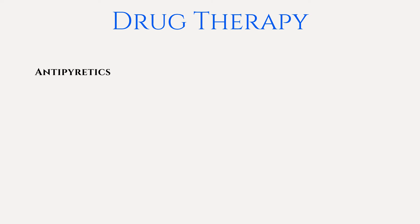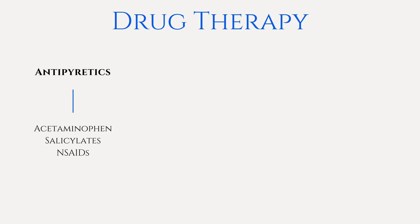There are three types of drug groups typically implemented to manage inflammation, depending on the circumstances of each patient and provider orders. Antipyretic drugs are used to manage fever and include acetaminophen (also known as Tylenol), salicylates such as aspirin, and NSAIDs such as ibuprofen and naproxen sodium. All of these inhibit synthesis of prostaglandins, which prevents them from affecting the temperature regulation center in the hypothalamus.